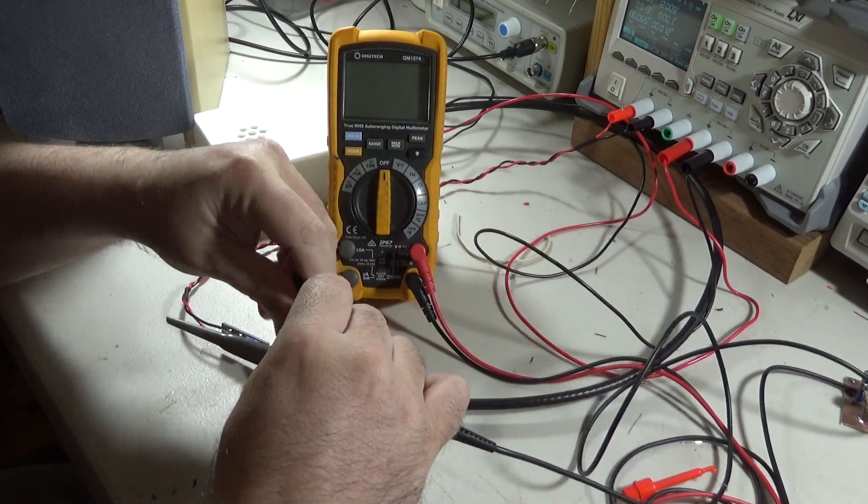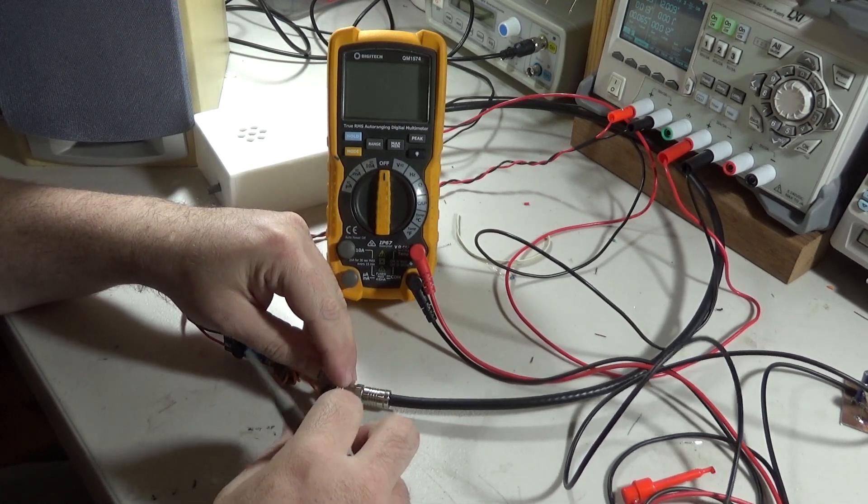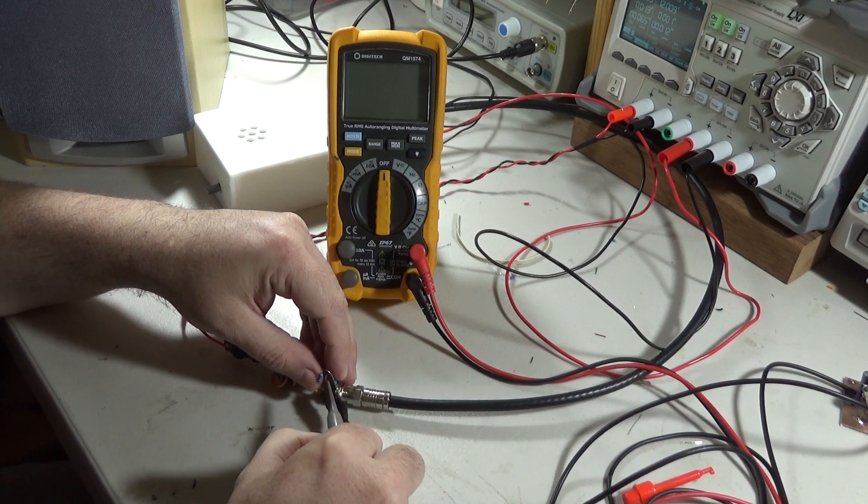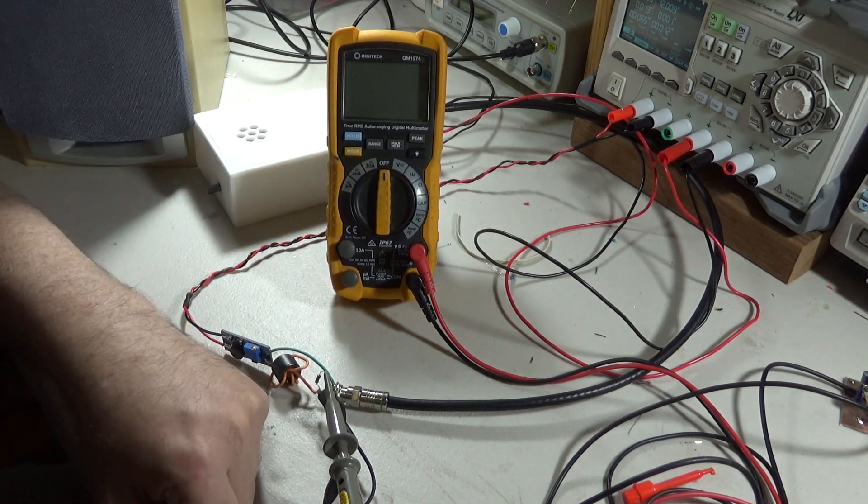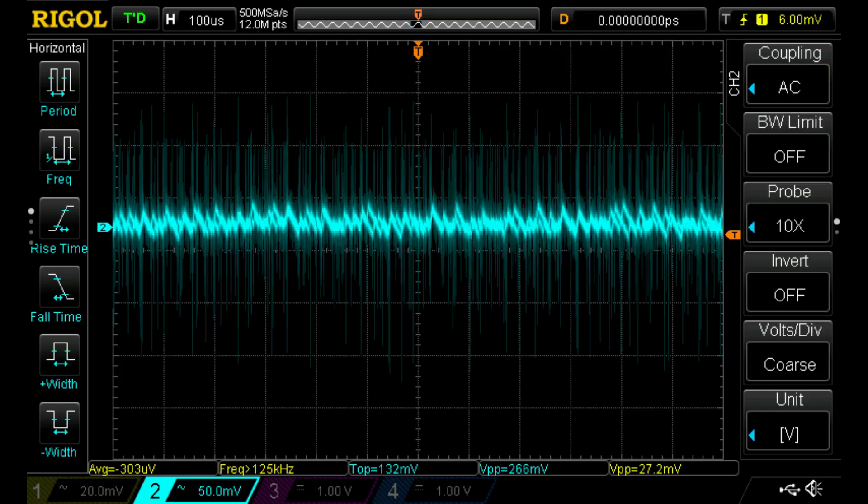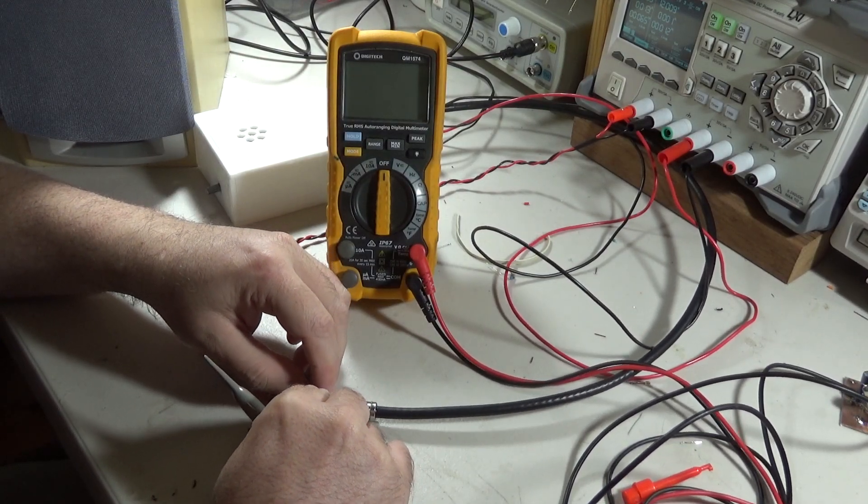Well if we get our oscilloscope out and connect it to the output of this boost converter and we have a look at the oscilloscope screen, you can see that there is all kinds of high frequency noise at about 260 millivolts peak to peak or so. So what we're going to do next is try to make a circuit that deals with that problem.